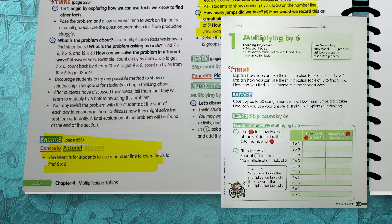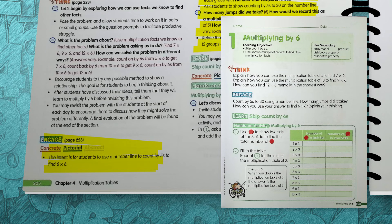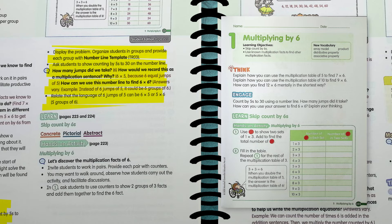In the engage section, provide your students with a number line and ask them to count by 5s on the number line to 30 and explain the number of jumps taken. Ask your students to explain how this number line could be used to find 6 times 6. The goal is to let your students explore so that you can explain the concept in the next part, the learn.